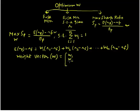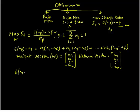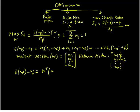We can also write the return vector containing R1, R2 through Rn — but read these as excess returns: R1 minus Rf, R2 minus Rf, and so on till Rn minus Rf. This means that our excess return can be simply written as the transpose of the weight vector times the excess return vector.